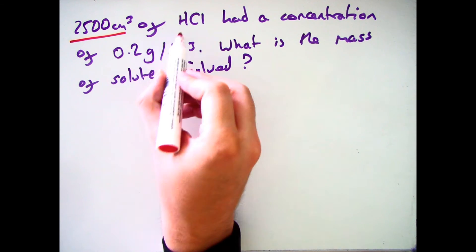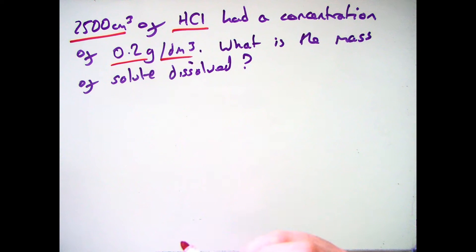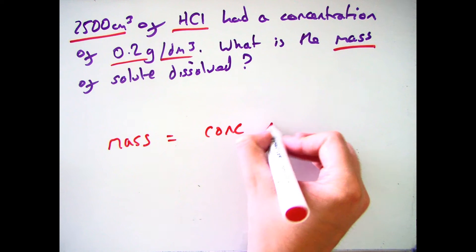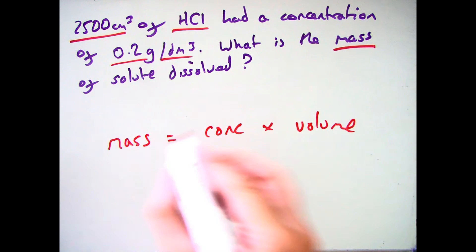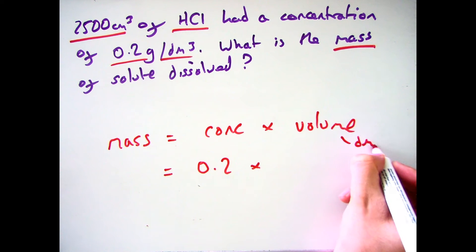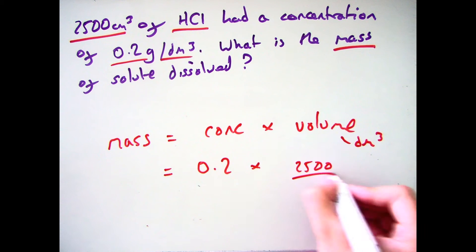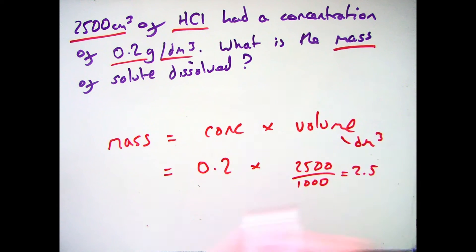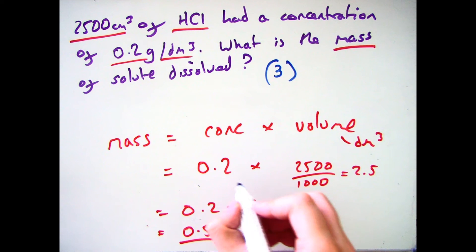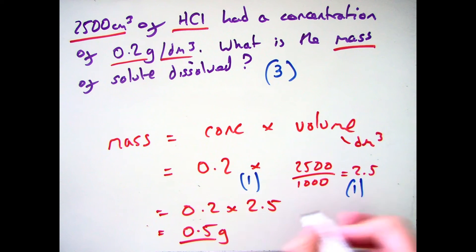The next question: 2,500 centimetres cubed of hydrochloric acid had a concentration of 0.2 grams per decimetre cubed — what is the mass of solute dissolved? Mass is concentration times volume. Concentration is 0.2 g/dm³ and volume is 2,500 cm³, which we must convert by dividing by 1,000, giving 2.5 dm³. So 0.2 times 2.5 gives a mass of 0.5 grams. For three marks: one mark for the multiplication, one mark for converting the volume, and one mark for the correct answer of 0.5 grams.